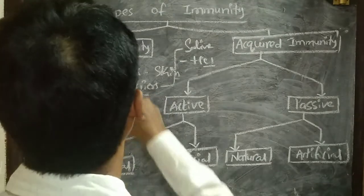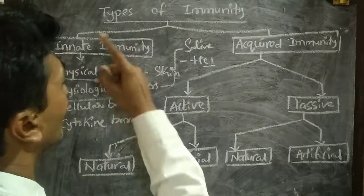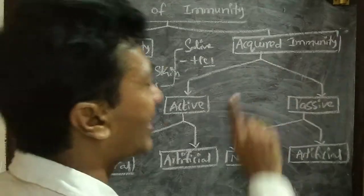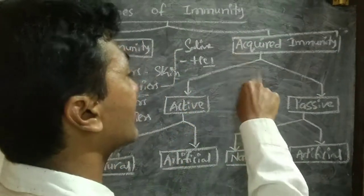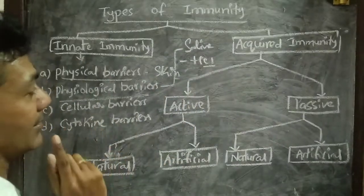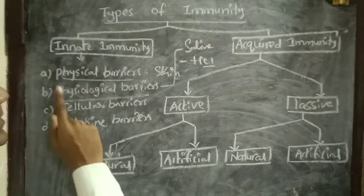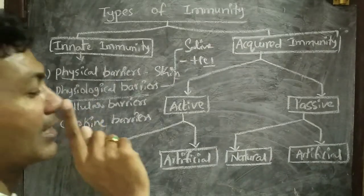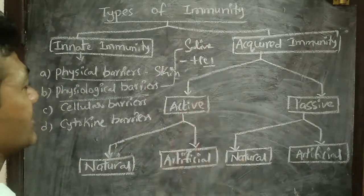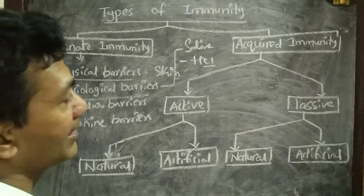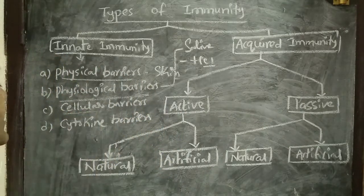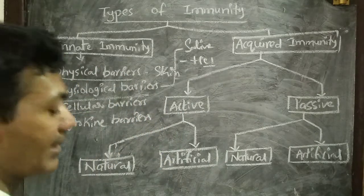These innate defenses are common to all organisms, though they may vary slightly. All organisms possess innate immunity — like skin and secretions — which are present by birth. The third component is cellular barriers. In immunological responses, cells play a vital role.